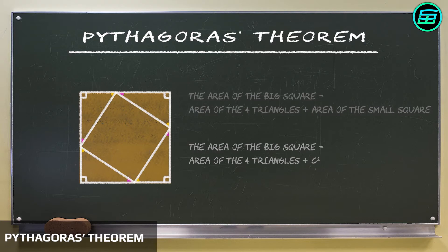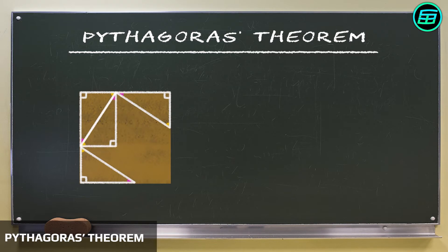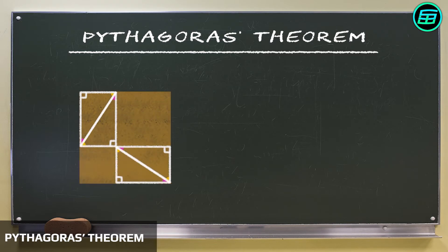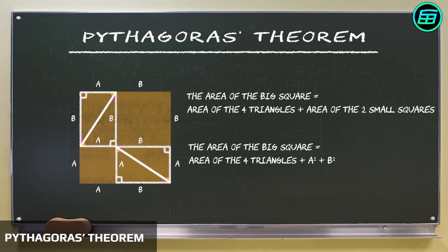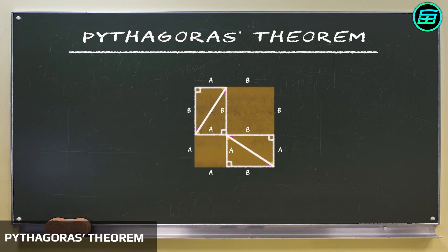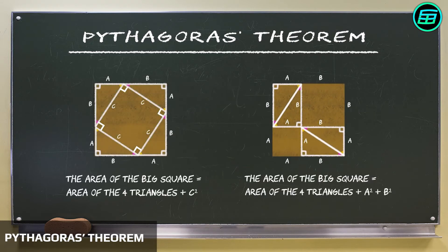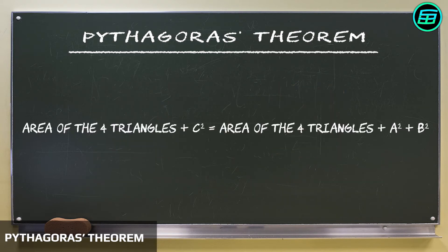If we rearrange the triangles, we get a different shape without changing the area of the big square. Now the area of the big square equals the area of the 4 right triangles and the area of the small squares. We have found two different formulas for the area of the big square. Putting these equal to each other, we find that C squared equals A squared plus B squared.